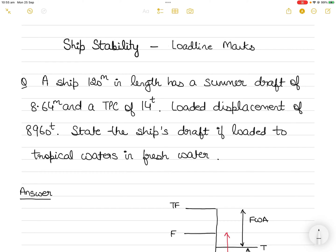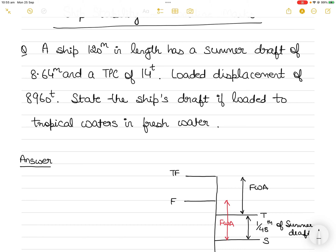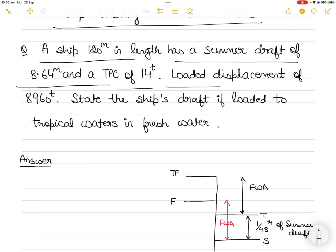Hi everyone. In today's video I will take up a ship stability question which is related to load line marks. This question often confuses students. There is a ship which is 120 meters in length, it has a summer draft of 8.64 meters, a TPC of 14 tons, and a loaded displacement of 8960 tons.